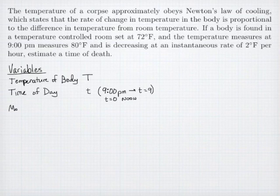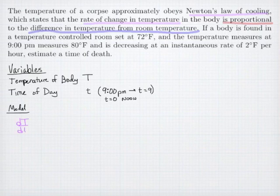We have our variables. Secondly, we need to identify a model. Let's look at our information and see if we can identify what model we should use. We're looking at Newton's law of cooling. The rate of change in temperature is proportional to the difference in temperature from the room temperature. Let's see if we can translate what that means. Rate of change is a derivative. We're saying that the derivative of the temperature is proportional, so equal to some constant times the difference in temperature from room temperature. This means we're taking the difference of T, the temperature of our body, and we're subtracting the temperature of the room, which is 72 degrees.